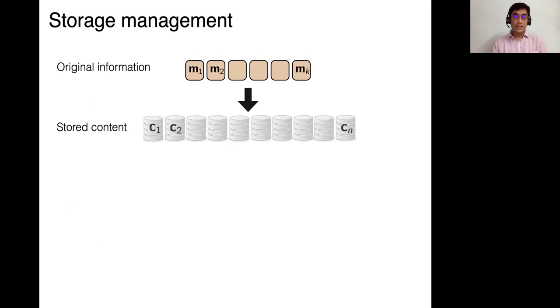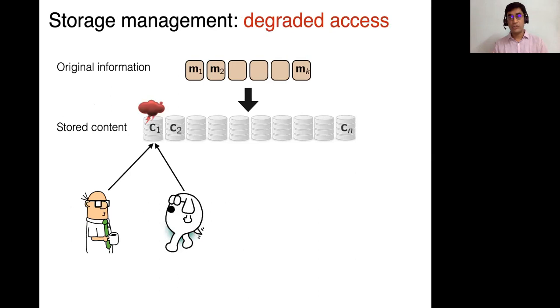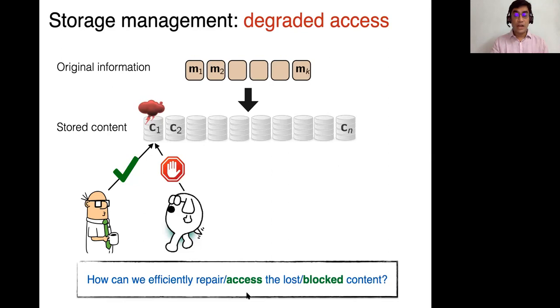But in the cloud storage or distributed storage context, because there are so many servers and tons of data, one of the things which happens often is that one of the nodes, just a single node, just goes down or gets repaired. Another thing which can also happen is that you might have two parties who want to both access the contents on a particular node in a distributed storage system. And then one of them is called degraded access, and the other one has to wait. So in a context like this, a very interesting question is, how do we efficiently repair or access either the lost content or the blocked content?